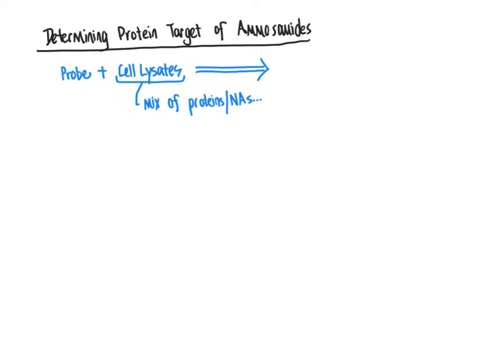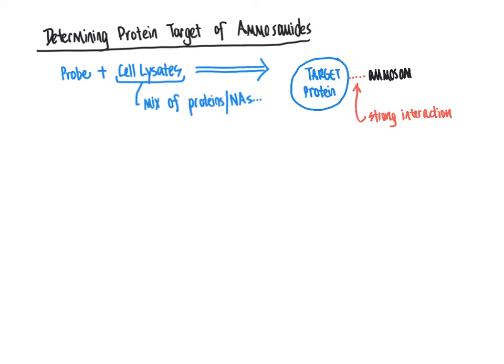The strong interaction hypothesized between the amosamide and its target protein is not necessarily a covalent interaction — it could be through other intermolecular forces. Compounds that bind to proteins most commonly do so through electrostatic interactions and other types of intermolecular attraction rather than covalent bonds. So strong non-covalent interaction was hypothesized to occur between the amosamide and its target protein.